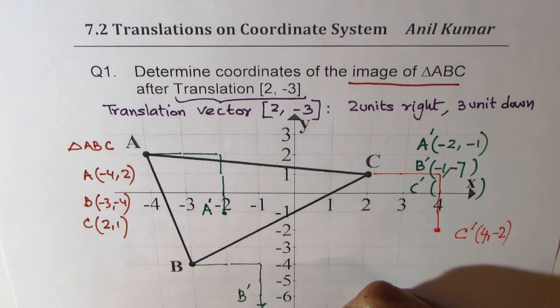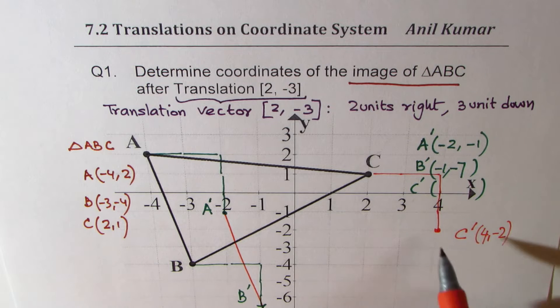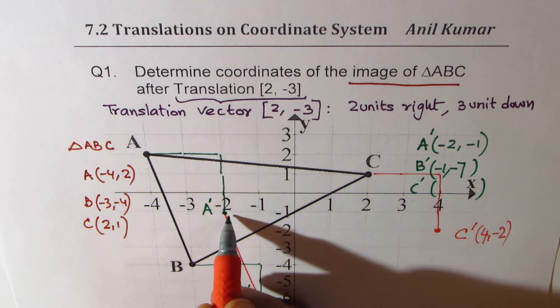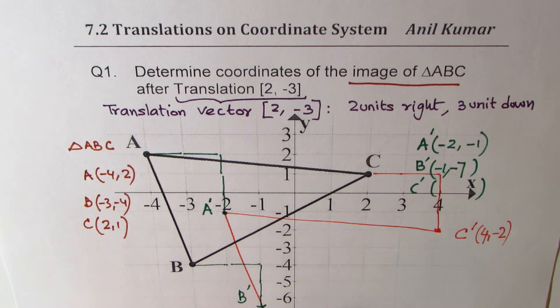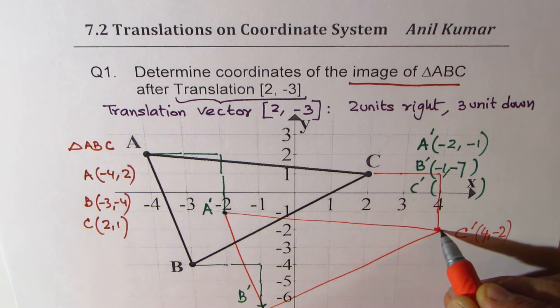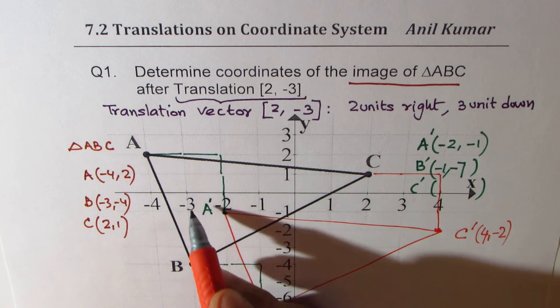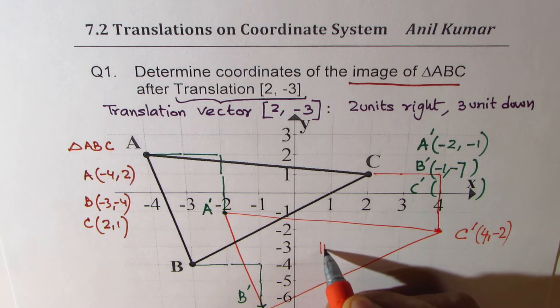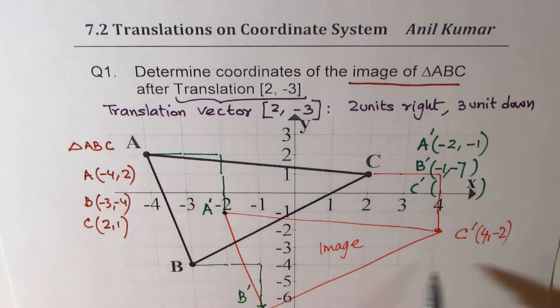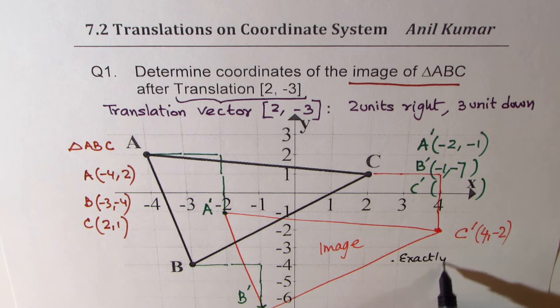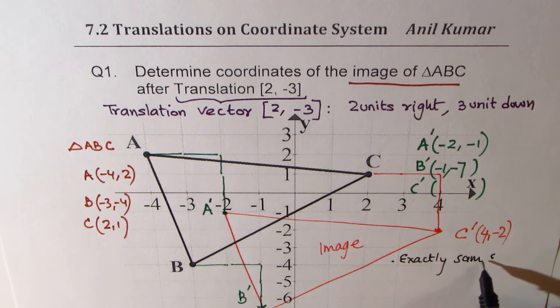So if I join these points, so let me join them. You should use a ruler. And then this with A', we get C'. And then with B', I get that triangle. Now this triangle, which is A'B'C' is the image with these coordinate points. So we actually translated the whole figure. And what did you notice here? You notice that the shape remains exactly same. So what we get here is exactly same shape.